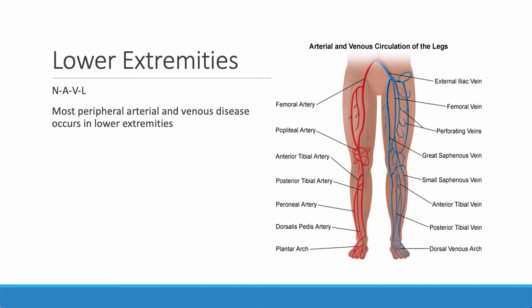In the lower extremities, we do see vascular disease. Remember the anatomy: going from outside to inside, you access nerve first, then artery, then vein, and then lymph. The nerve is out here, the artery is here, the vein is here, and the lymph is furthest to the medial aspect. That's important when you're putting in lines and doing things like that.